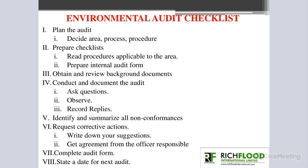The sixth content of this checklist is requesting corrective actions. Once you have been able to identify your findings or non-conformances, you write down your suggestions and get agreement from the officers responsible. The seventh content is completing the audit form and stating a date for the next audit.